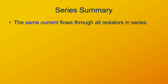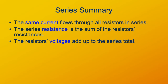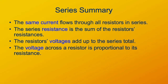The same current flows through all resistors in series. The series resistance is the sum of the individual resistances. The voltage drops across each resistor add up to the total source voltage, and the voltage across each resistor is proportional to its resistance — since V = IR and all resistors share the same current I, V is directly proportional to R.